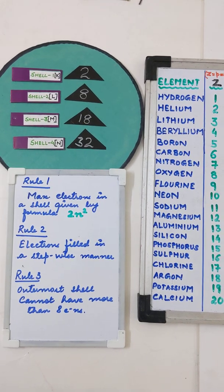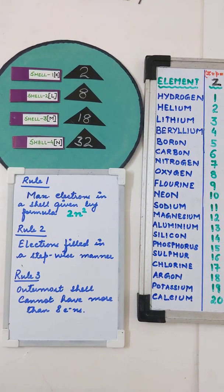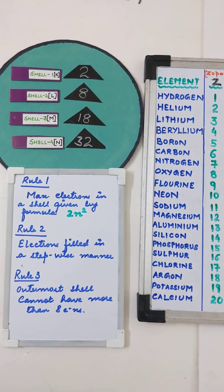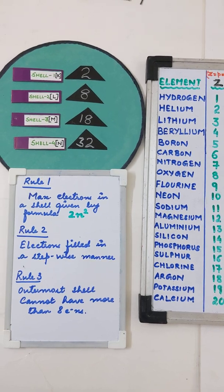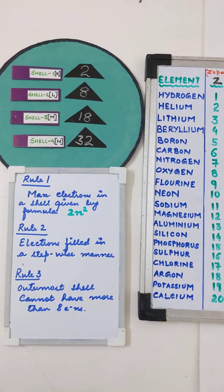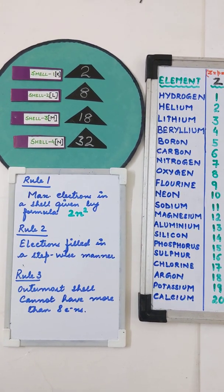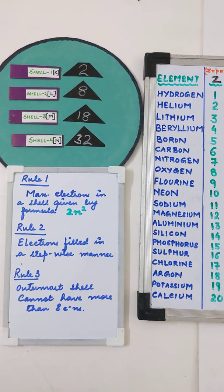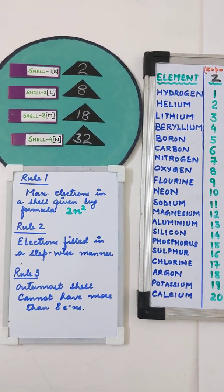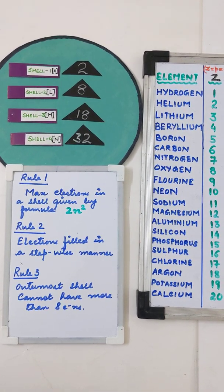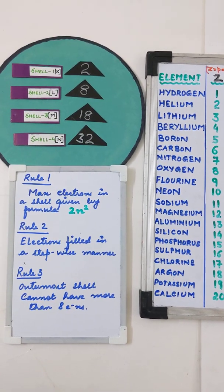Therefore, maximum electrons in K shell is 2, L shell is 8, M shell is 18, and N shell is 32. Rule number 2 states that the electrons are always filled in a stepwise manner. That means unless the inner shell is filled, electrons cannot jump onto the next shell.